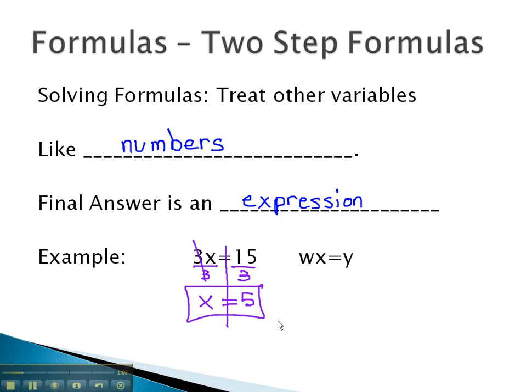It is much the same pattern we'll use if we have more variables, say, wx equals y. x currently is multiplied by w. To get w alone, we will divide both sides by w. Our final answer is an expression, that fraction y over w.